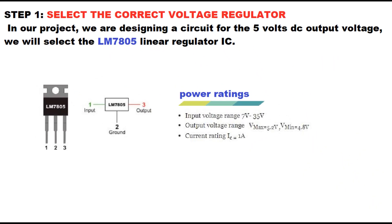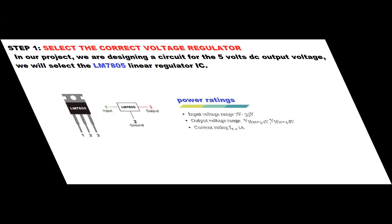Step 1: Select the correct voltage regulator. In our project, we are designing a circuit for 5 volts DC output voltage. We will select the LM7805 linear regulator IC.